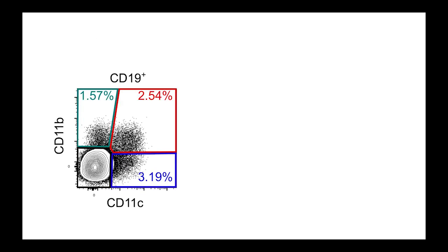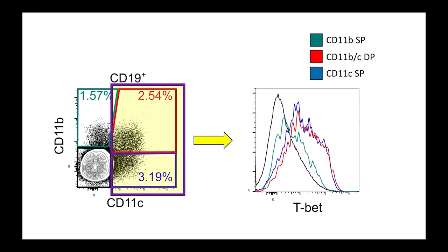We identified three B-cell subsets expressing CD11C, CD11B, or both. Of these, the two CD11C expressing subsets had the most TBET.